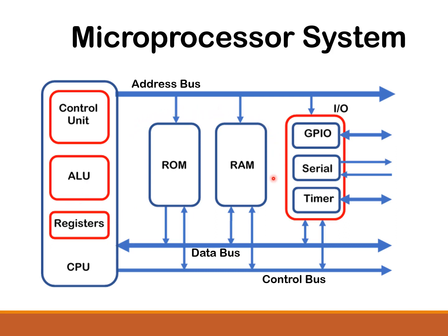Next is the memory section, which consists of the read only memory or ROM, and random access memory, RAM. If you want to connect any external device to the microprocessor system, you will need an input-output device. This could be a general-purpose input-output device or chip (GPIO), a serial chip for serial transmission of data, or a timer chip.